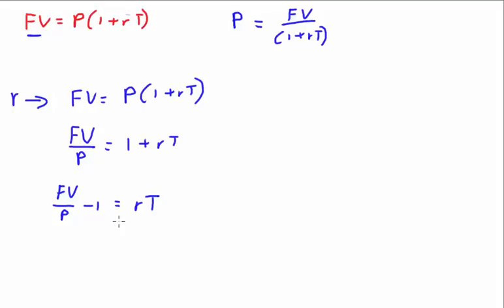I want to stop here because at this line — FV/P − 1 = RT — you've done most of the work. If you want time on its own, you go through the same steps to reach this line, then move R over. If you want the rate on its own, you move T over. I'll show you both.